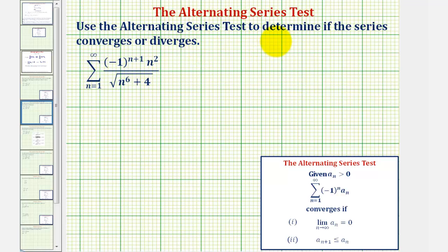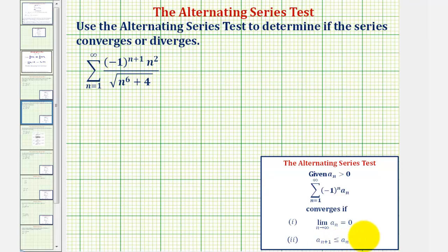We want to use the alternating series test to determine if the infinite series converges or diverges. To apply the alternating series test, we're given that a sub n, the non-alternating part of the series, is greater than zero. The alternating series converges if the limit as n approaches infinity of a sub n equals zero — which is the nth term divergence test — and that a sub n plus one is less than or equal to a sub n, so the terms must be non-increasing. If the first two or three terms are increasing, it doesn't really matter as long as the terms are non-increasing long term.